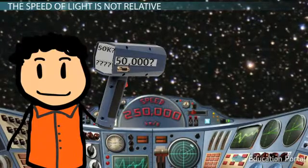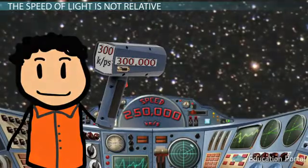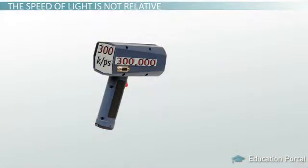However, you would measure the speed of light to be 300,000 kilometers per second. Don't buy a new radar gun just yet. As it turns out, your radar gun is correct. The speed of light is the same relative to your fast moving ship or even an external stationary point.